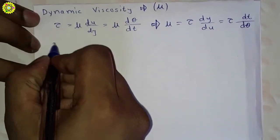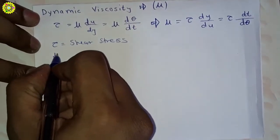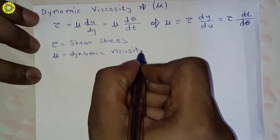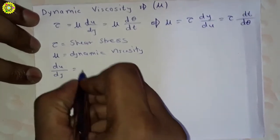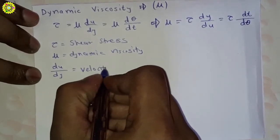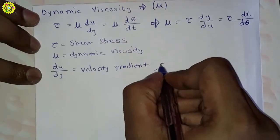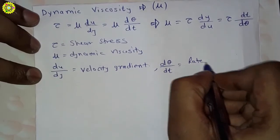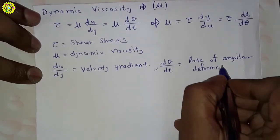Here tau is shear stress, mu is dynamic viscosity, du upon dy is velocity gradient, and d-theta upon dt is rate of angular deformation.